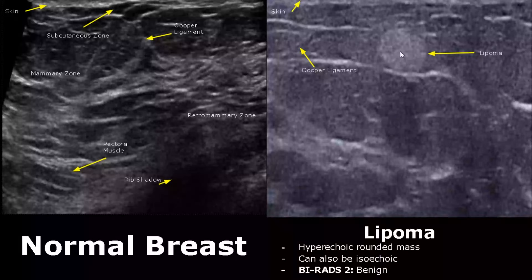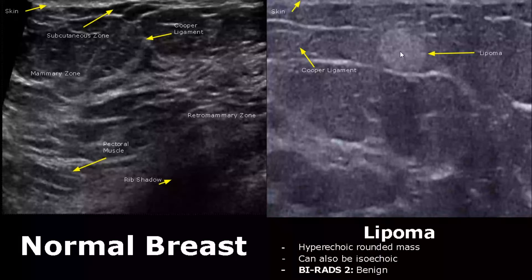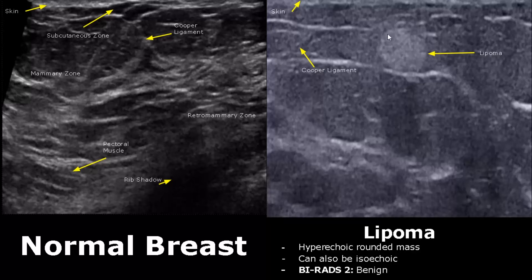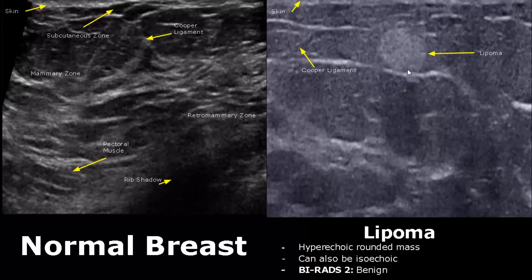A lipoma will appear as a hyperechoic, rounded mass. Usually hyperechoic rounded masses are benign. It has a BI-RADS score of 2. Despite this appearance, routine screening mammography should be done.